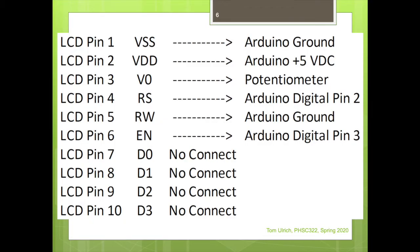Here's how you connect it for pins 1 through 10. VSS goes to Arduino ground, VDD to Arduino plus 5, V0 goes to the potentiometer. RS goes to Arduino pin 2. Read/write just goes to ground — that makes it always write. Enable will be on pin 3. D0, D1, D2, and D3 are no connect — just leave those floating.